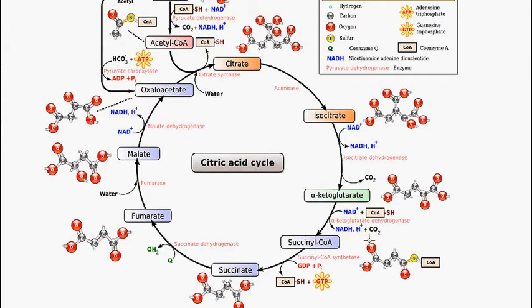This enzyme complex, the alpha-ketoglutarate dehydrogenase complex, is activated by calcium and inhibited by NADH and also succinyl-CoA. When there's high levels of NADH and succinyl-CoA, the enzyme is inactive.